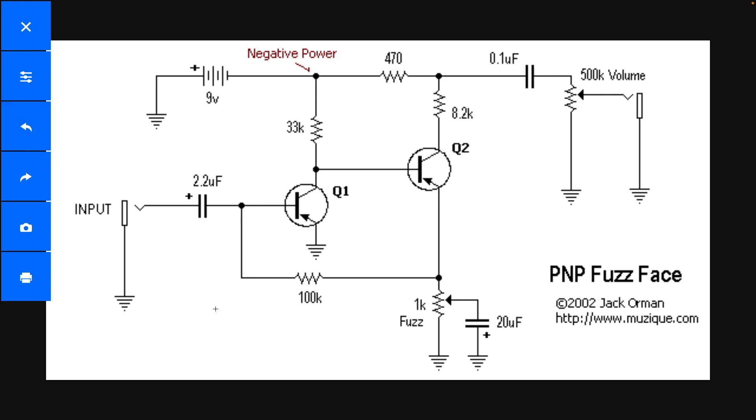Hello everyone, welcome to another schematic analysis. This is going to be the classic Fuzz Face by Dallas Arbiter. The PNP version is the original. This is where the transistors are kind of backwards and the power is kind of backwards. It's the original.